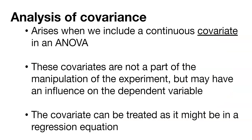Analysis of covariance arises when we include a continuous covariate inside an analysis of variance. The analysis of covariance evaluates whether or not the means of a dependent variable are equal across different levels of a categorical independent variable, and this categorical independent variable is often an experimental treatment.